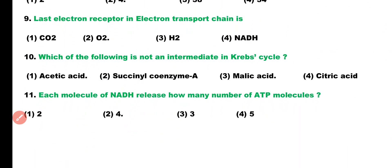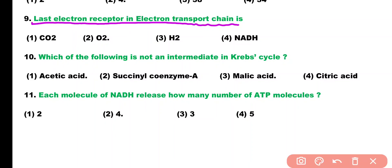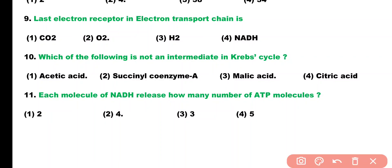Question number 9. The last electron receptor in the electron transport chain is: carbon dioxide, molecular oxygen, H2, or NADH. Correct answer is option 2. The last electron receptor in the electron transport chain is molecular oxygen.